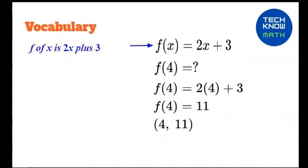f of x is 2x plus 3. That is how you read this phrase. f of 4 means input the value 4 for x and simplify to find the value for y. And in this case, the y is the f of x. f of 4 is 11. This can be represented by the ordered pair 4, 11.